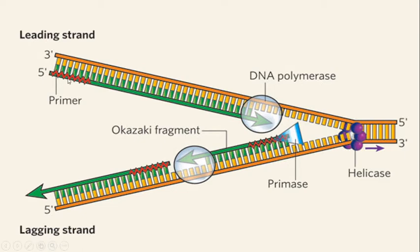DNA Polymerase requires a 3 prime end, which is provided by a primer — a short RNA nucleotide fragment that attaches to the template strand. This 5 prime to 3 prime end direction is followed. There are three types of DNA polymerase: DNA Polymerase 1, DNA Polymerase 2, and DNA Polymerase 3, with DNA Polymerase 3 being the main enzyme.